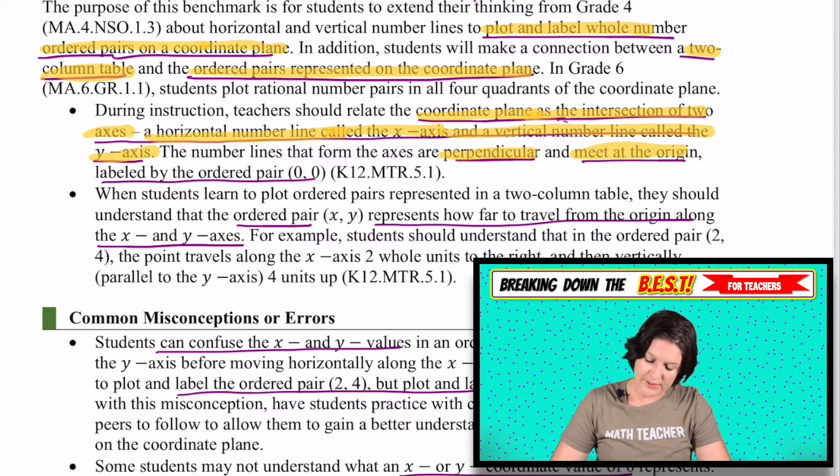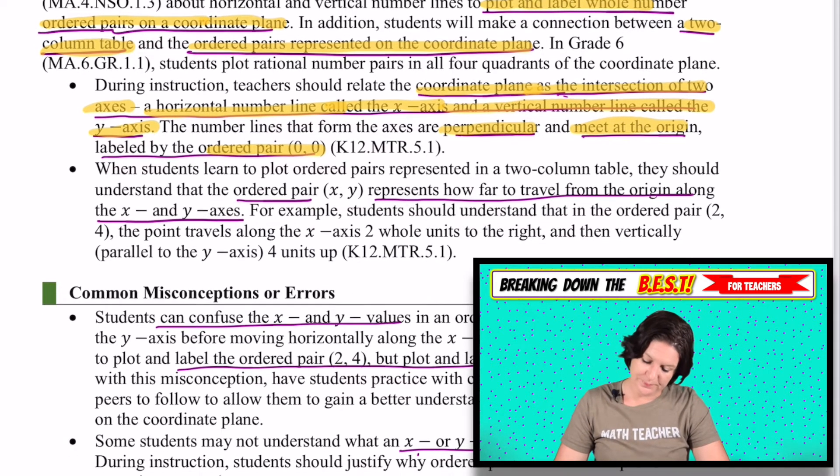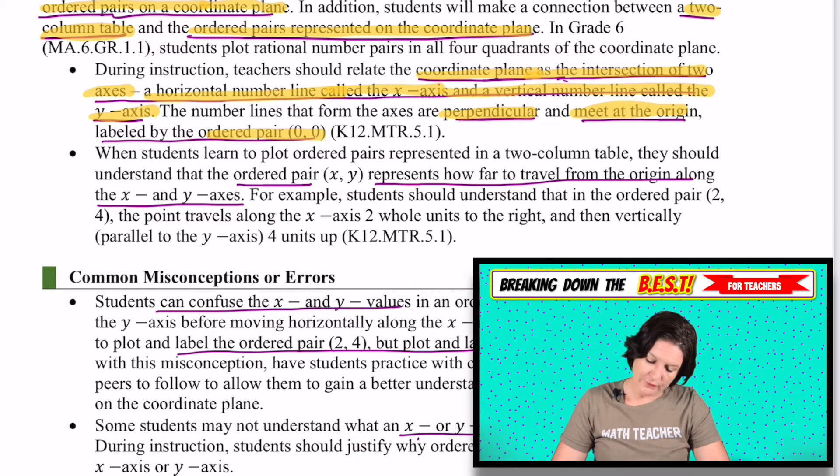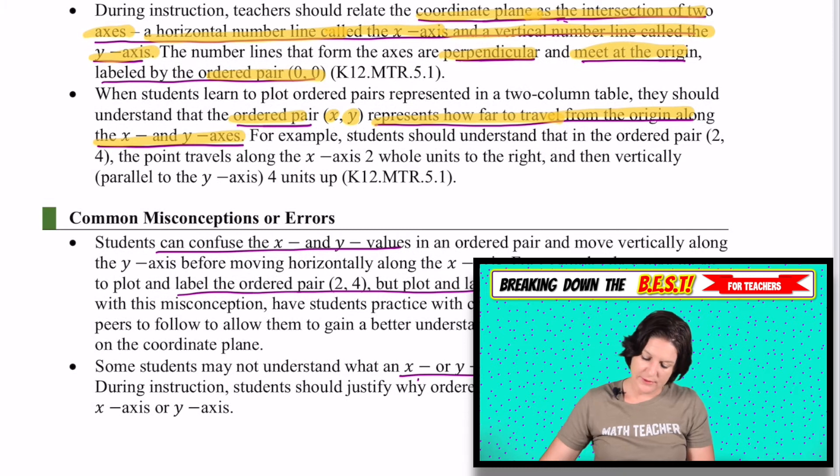They are perpendicular and they meet or intersect at the origin listed as the ordered pair (0, 0). Whenever we are labeling ordered pairs, we're always putting the x-coordinate first and then the y-coordinate. And this represents how far to travel from the origin along the x and y-axis.